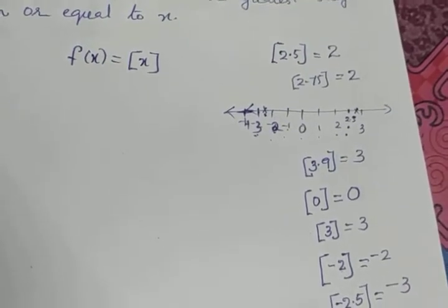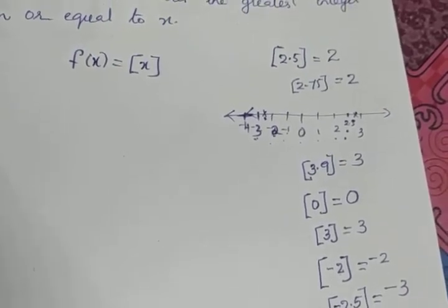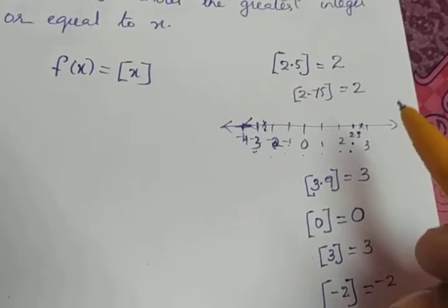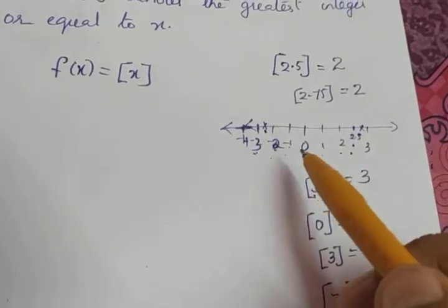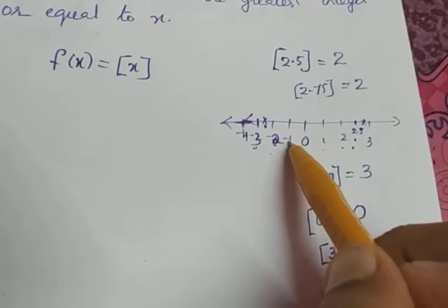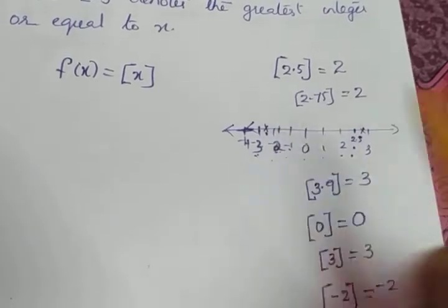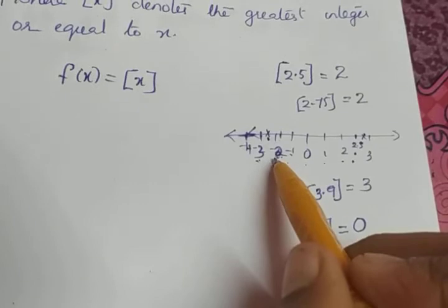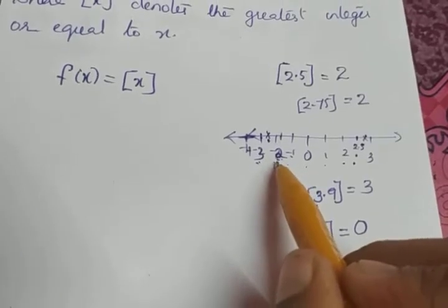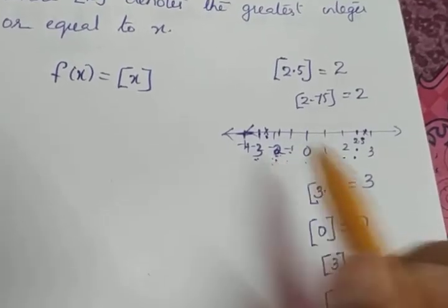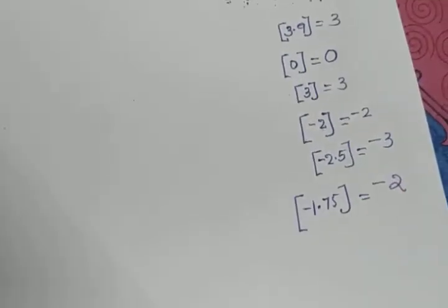Suppose I need to find the greatest integer of −1.75. We check where −1.75 lies — it lies between −1 and −2. So the greatest integer less than −1.75 is −2. That is ⌊−1.75⌋ = −2. This is how the greatest integer function is defined.